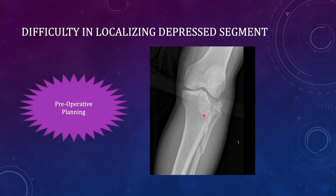This white flare represents the impacted bone — because of the depression, the cancellous bone underneath the depressed fragments gets impacted and becomes thick bone. Whenever you are elevating the depressed fragments, try to lift from this impacted part, not from the fragile fracture part, because the impacted bone is very strong. If you lift from this part you will get good screw purchase in this impacted bone.